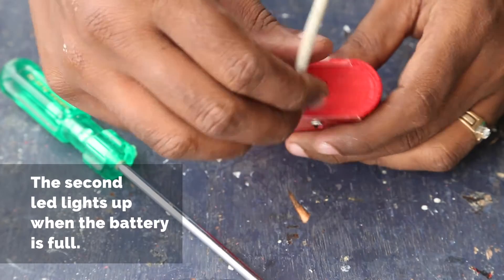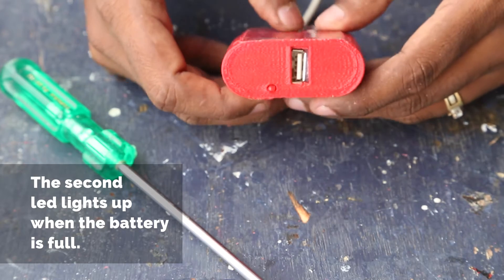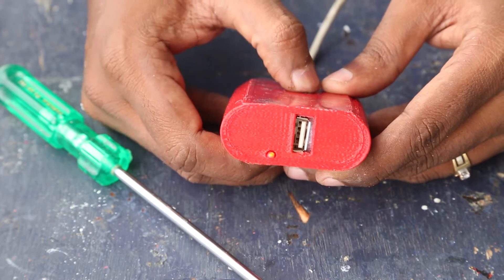Here I am connecting the micro USB from my phone charger and you can see the charging LED light up. And here turning on the switch lights up the voltage booster denoting that it's ready to charge the mobile.